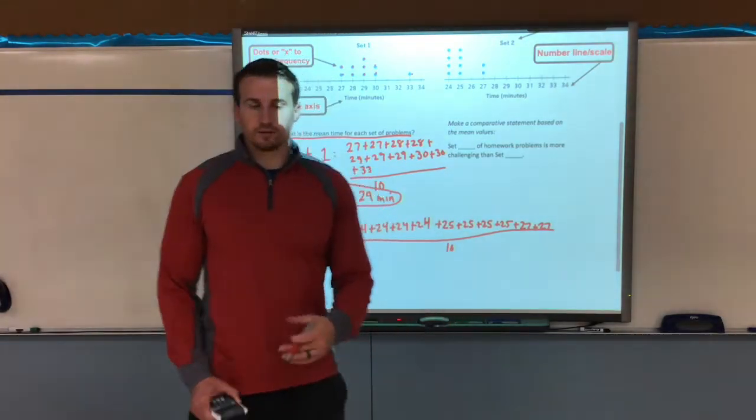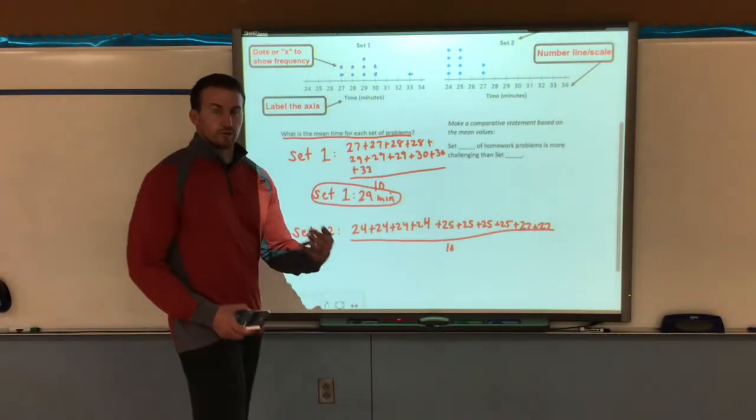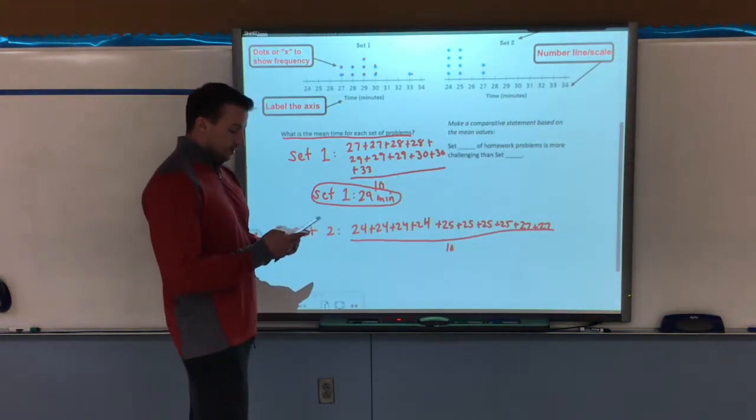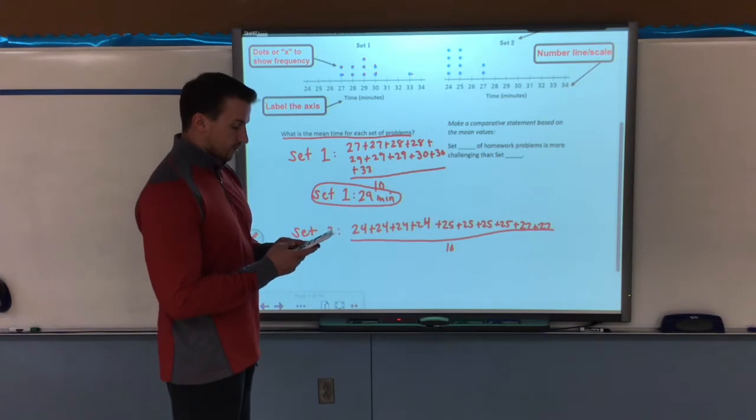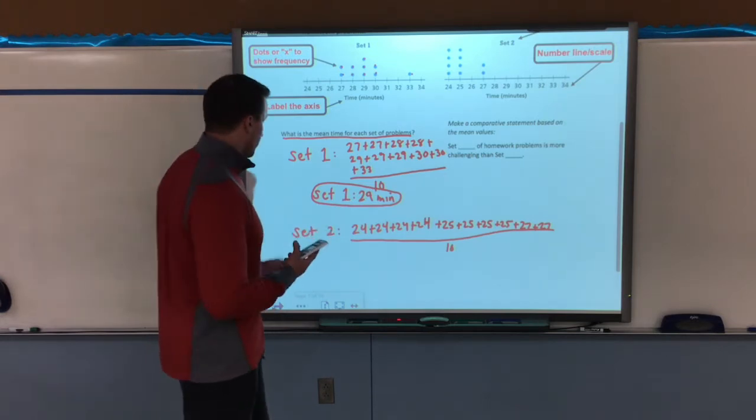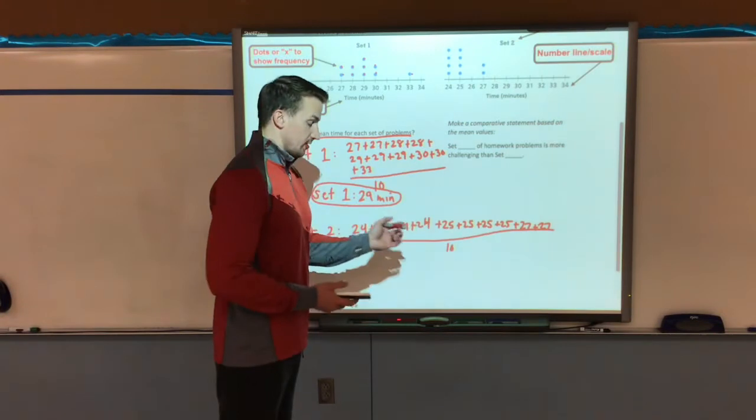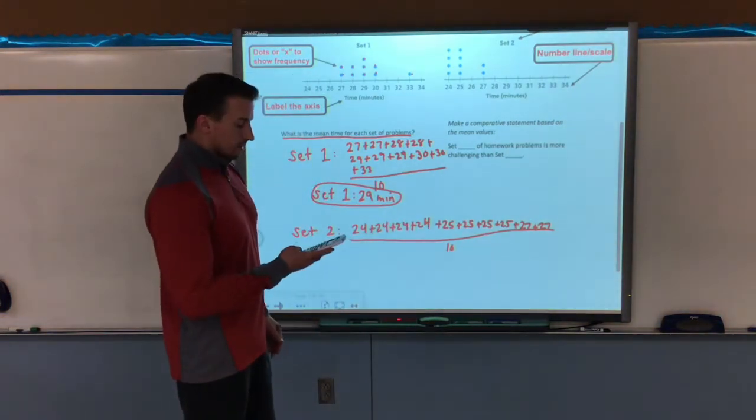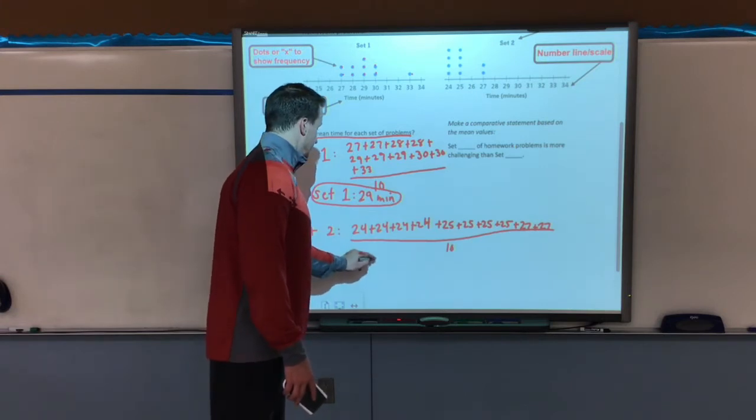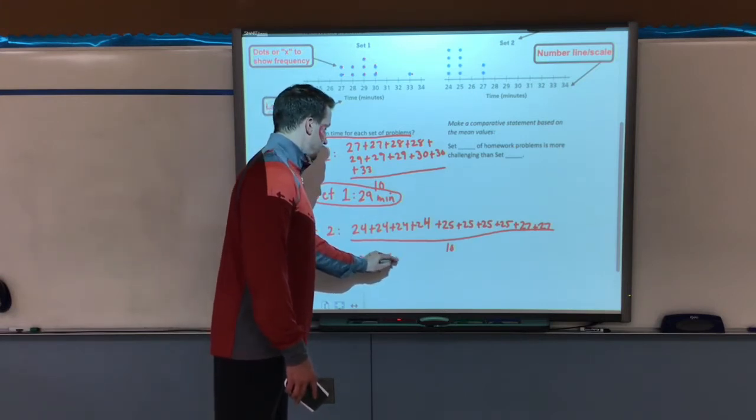Excuse my sloppiness. So I'm going to add all these up. I have 24 four times, I have 25 four times, and I have two 27s. So I add those all up, give me a grand total of 250. Divide that by 10, give me my set two mean, 25 minutes.